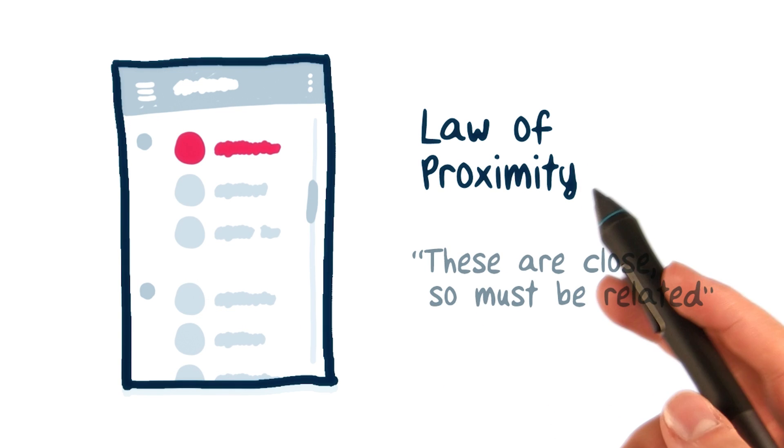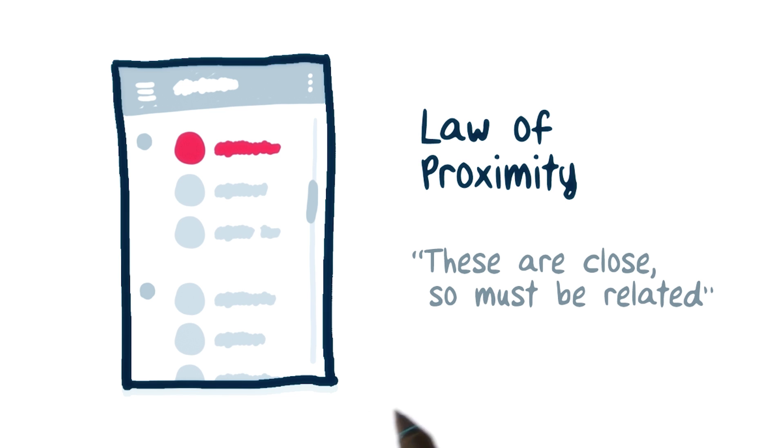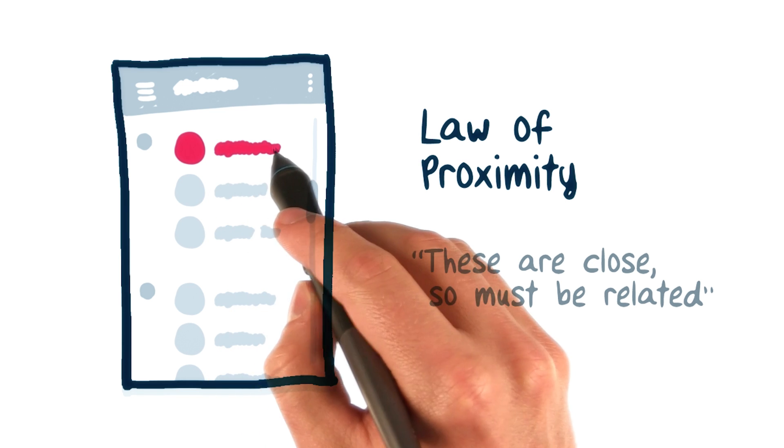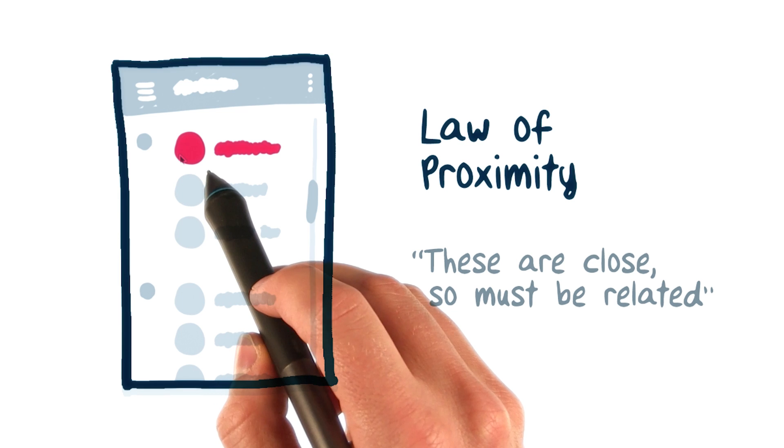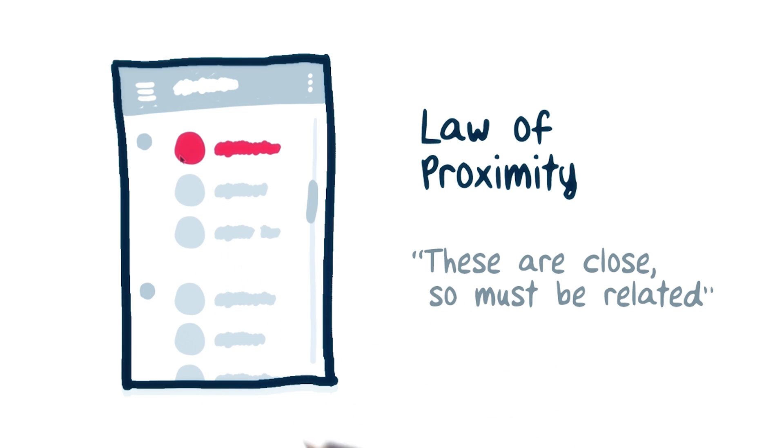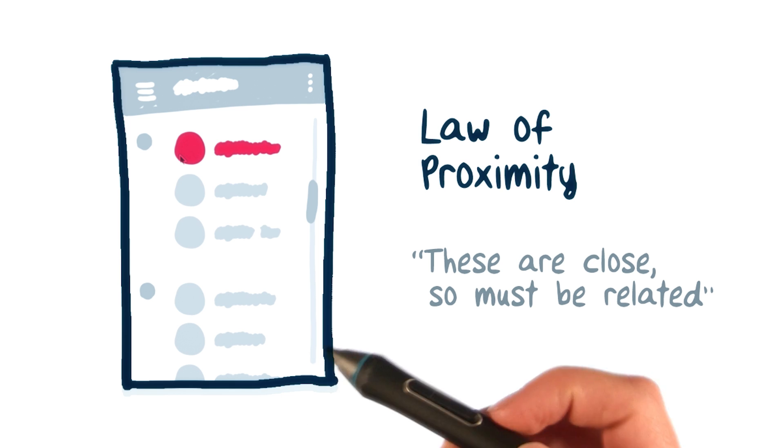Now how about the law of proximity? Returning to the example from our quiz, these boxes representing text are close to these circles that are likely images. Their closeness tells us instinctively that they must be related. The text is probably the label for the image.